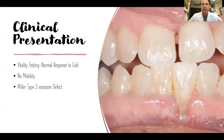Another thing we look at when deciding to graft these cases and what kind of root coverage we can get is where the interproximal horizontal bone levels are. In this case there's some slight horizontal bone loss — you can tell based on the open papillae, even though there's calculus present. Using the Miller classification system, this would be a Miller Type 3 defect, meaning 100% root coverage is not likely indicated.